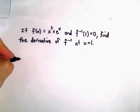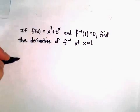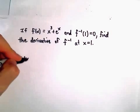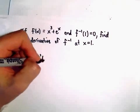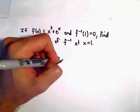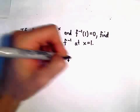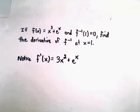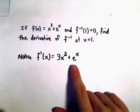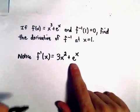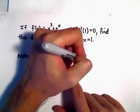One thing we can make sure of is that this function does have an inverse. So notice that the derivative f prime of x, that would equal 3x squared plus e to the x. But notice that this is always going to be greater than 0 for all x.